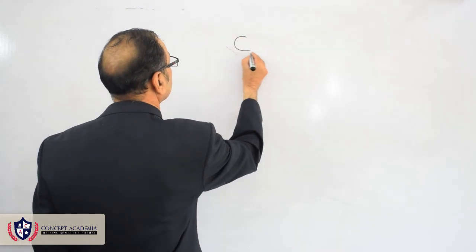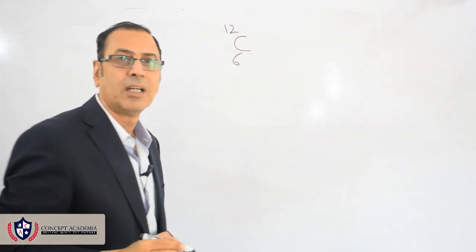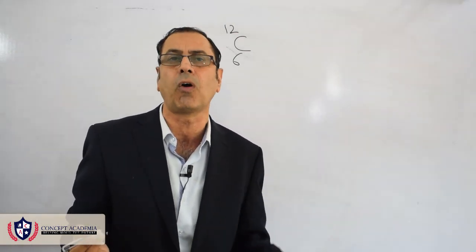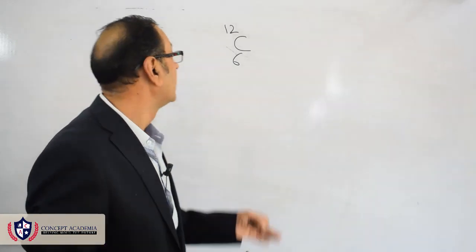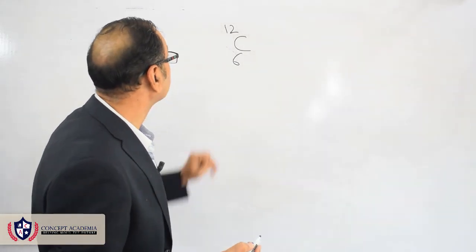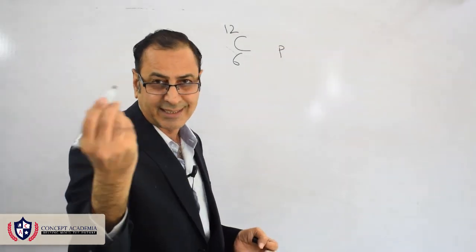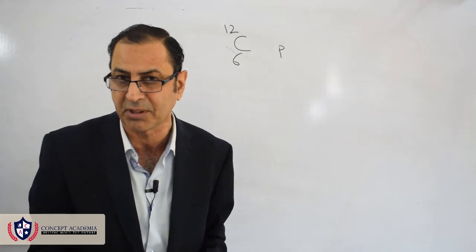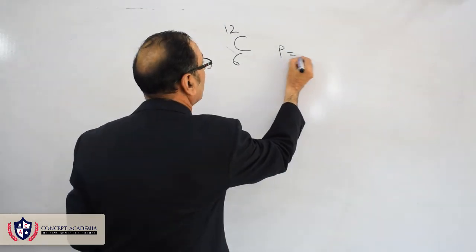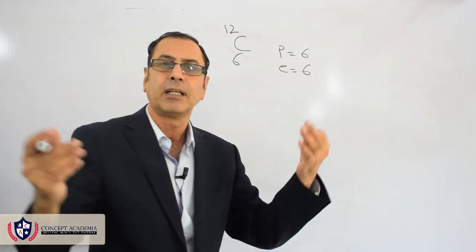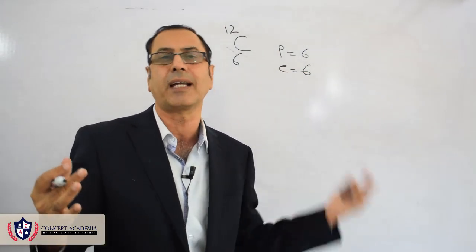For example, if I would like to draw the electronic configuration of carbon-12, you can look at the periodic table, which will be given to you in the examination hall. Carbon has atomic number 6 and mass number 12. Its protons are 6, and since protons and electrons in an atom are equal, electrons are also 6.